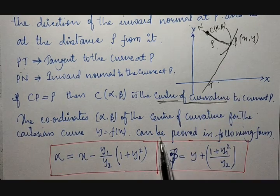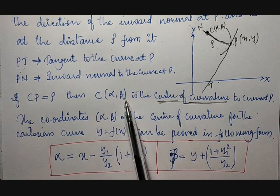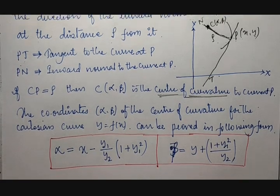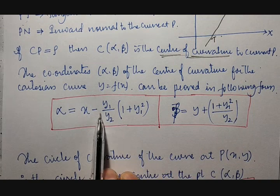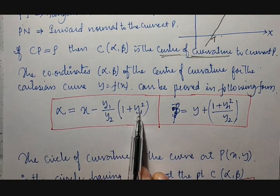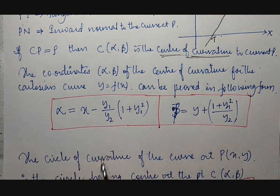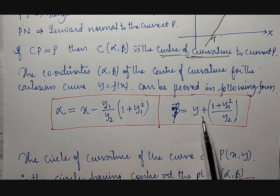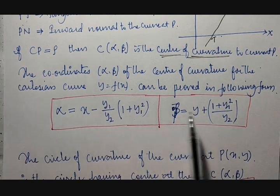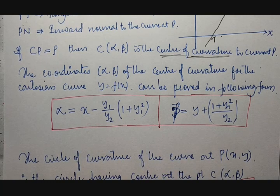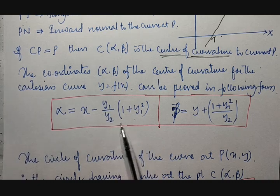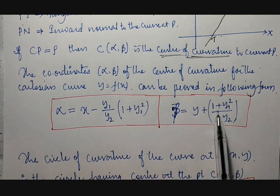We know C(α, β) is the center of curvature, but we should calculate the values of α and β. The value of α is calculated using the relation: α = x − y₁(1 + y₁²)/y₂. Notice that (1 + y₁²)/y₂ is part of the radius of curvature formula. Then β = y + (1 + y₁²)/y₂. The difference is that α moves along the x-axis and β along the y-axis.